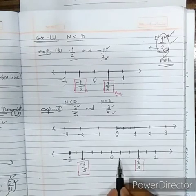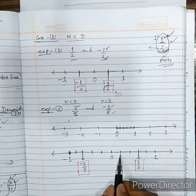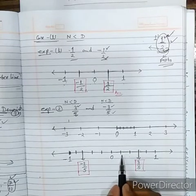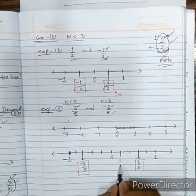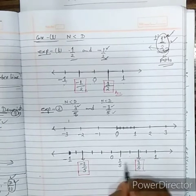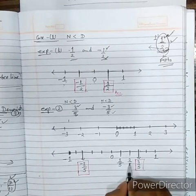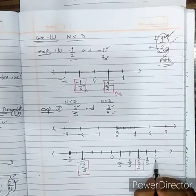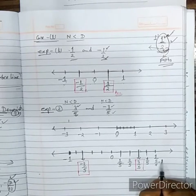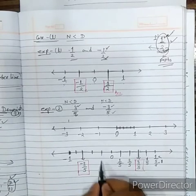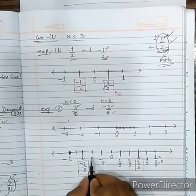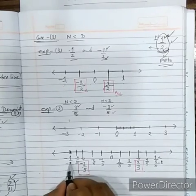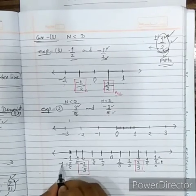We can label all the marks on the number line. Starting from 0 and counting parts, the first mark is 1 by 5, the second is 2 by 5, the third is 3 by 5, the fourth is 4 by 5, and the fifth is 5 by 5, which equals 1. Similarly on the left: minus 1 by 5, minus 2 by 5, minus 4 by 5, and minus 5 by 5, which gives minus 1.